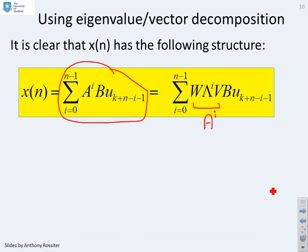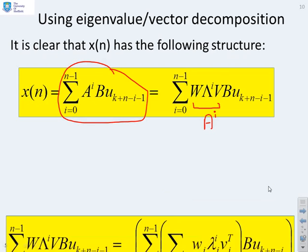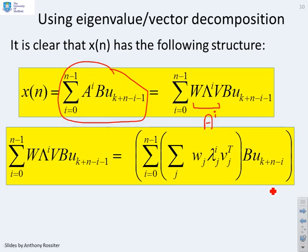Now what I'm going to do is say, I can actually unpack this expression w lambda to the i, v. I've done it here in this inner brackets. I can write it as the sum over j of w j lambda j to the power i, v j transpose.